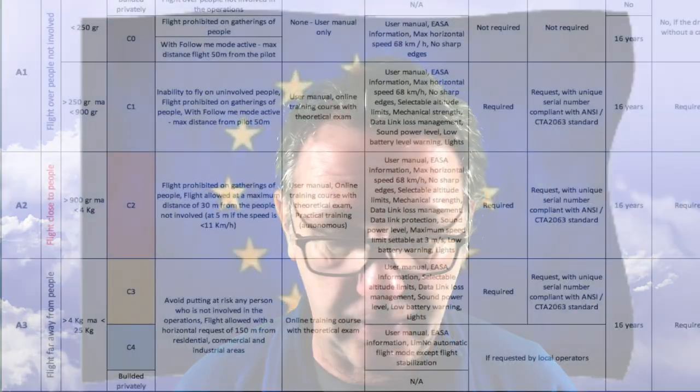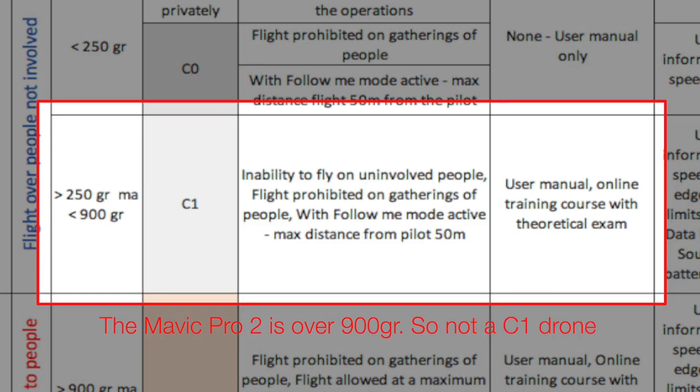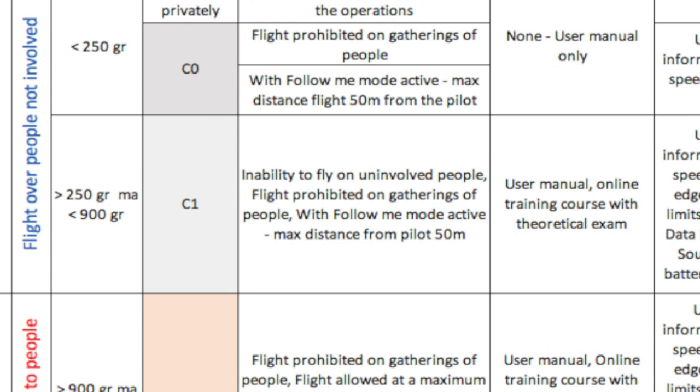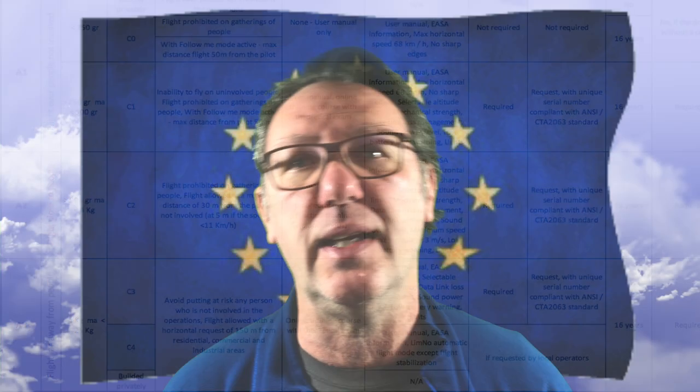It's a gray area, but actually it is stipulated quite well. You must be able to see and connect to the drone and the drone pilot — therefore sport games and that kind of thing are not allowed. With a C1 drone, like the Mavic Pro and Mavic Air, you cannot fly unintentionally over uninvolved people. Outside the Mavic Mini, every drone requires an online test.